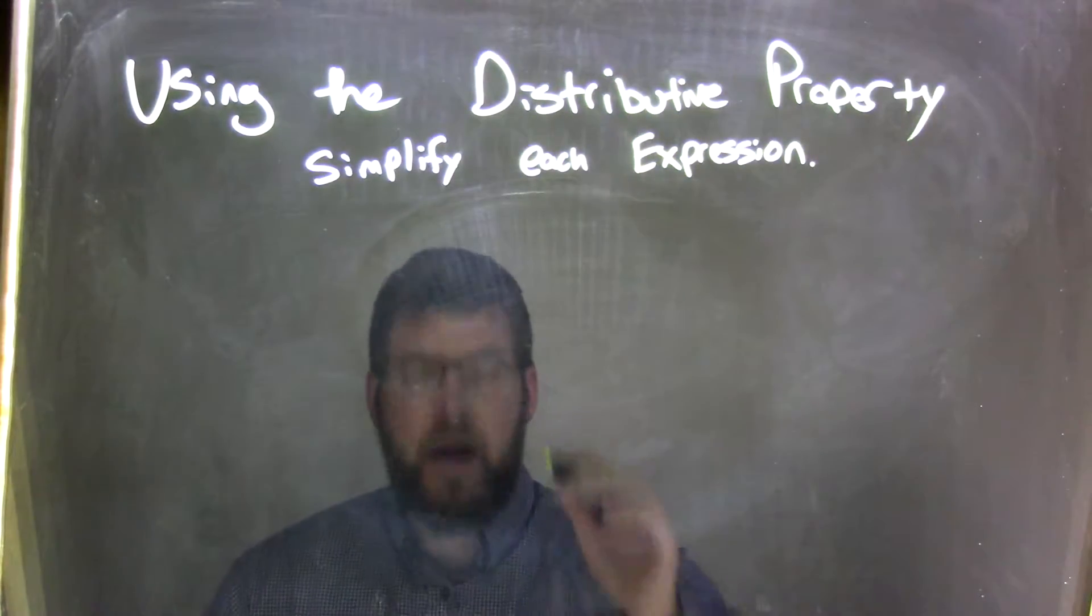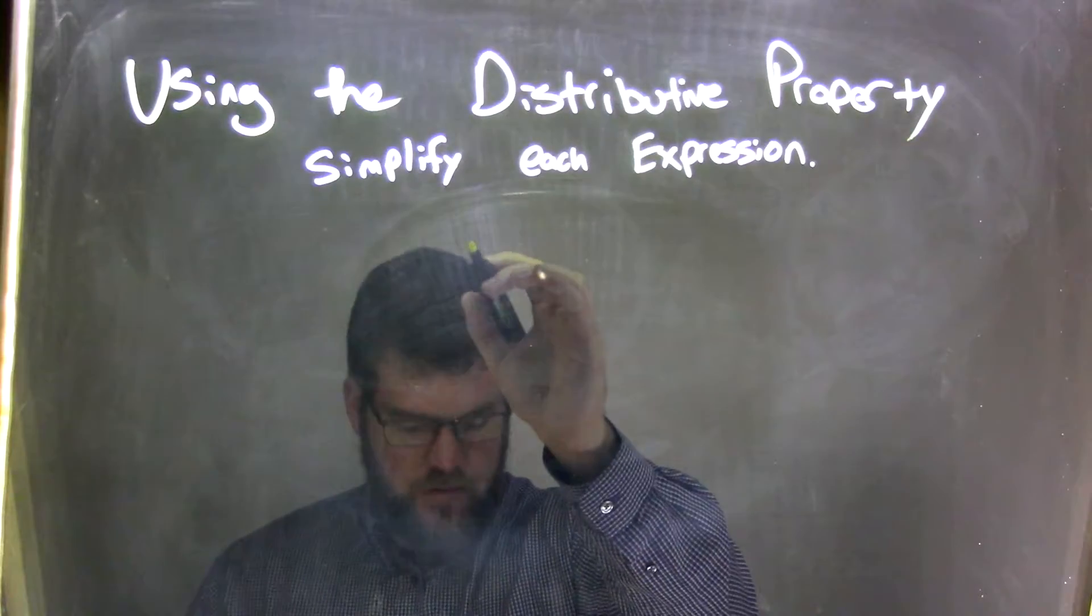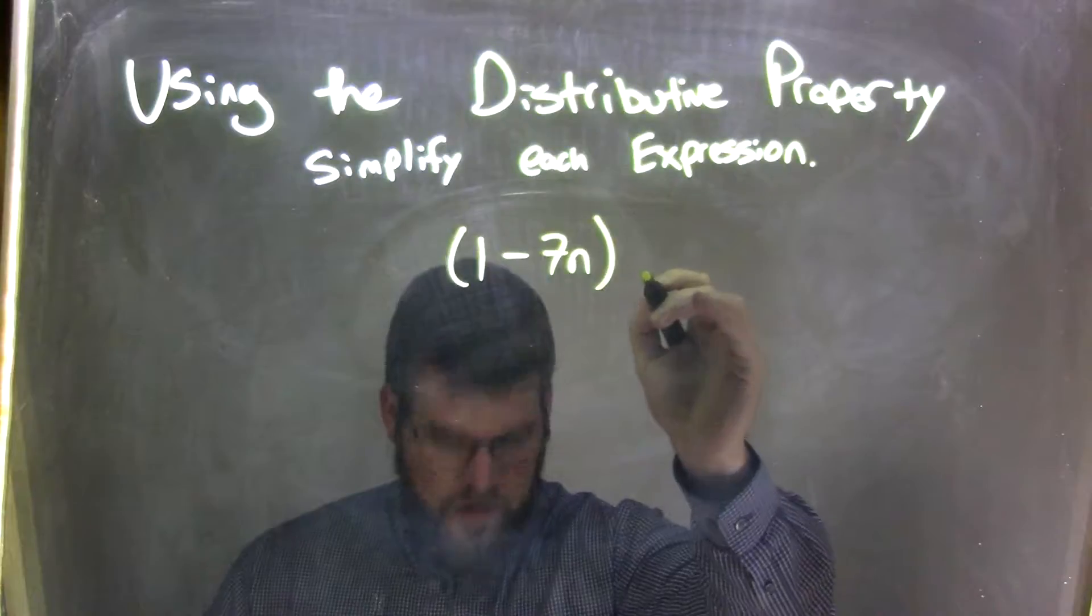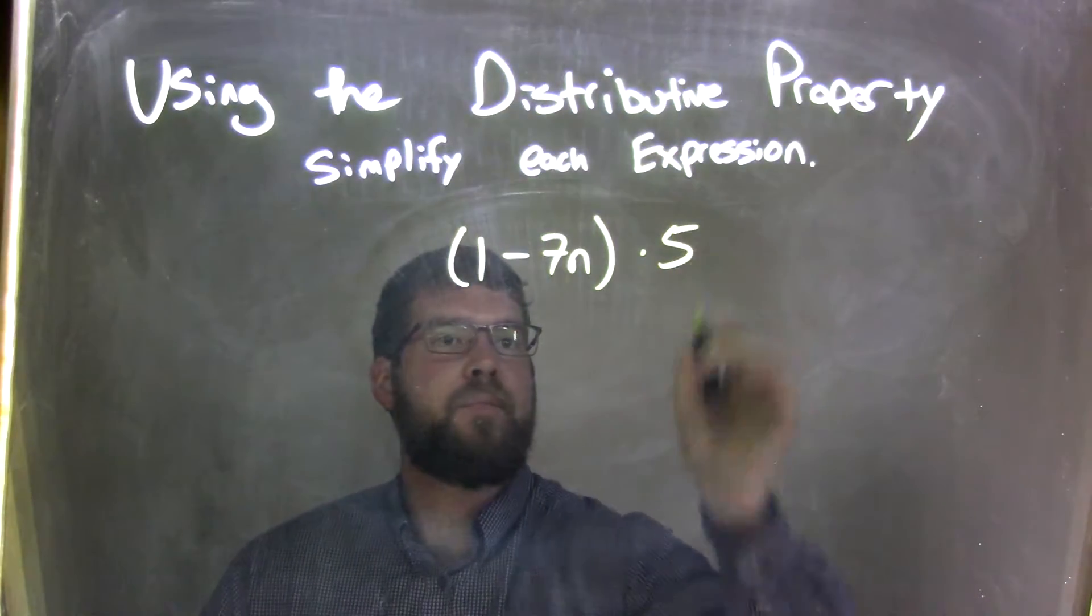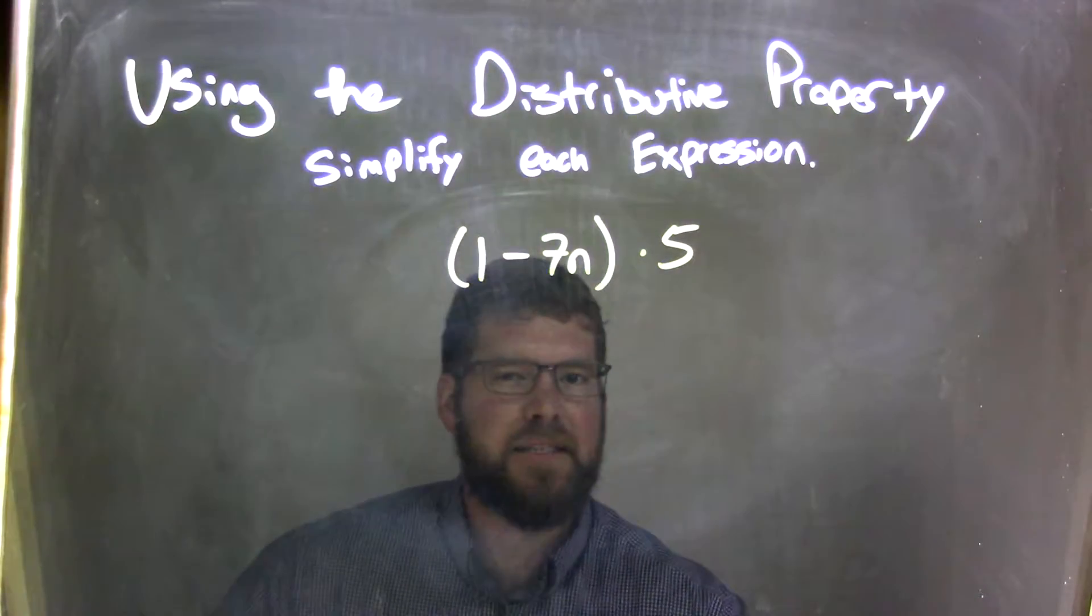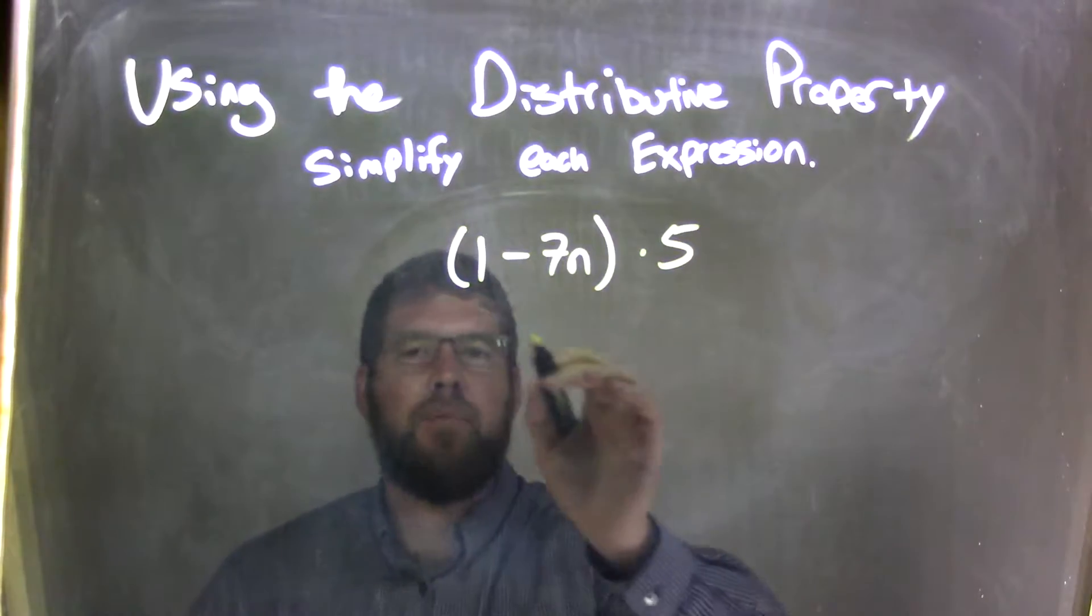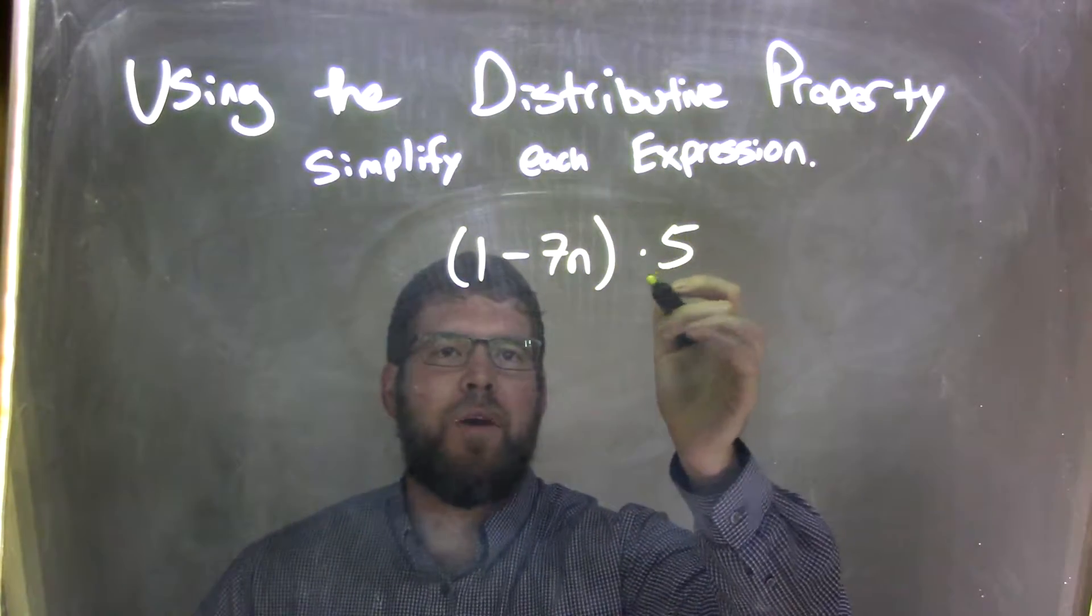So if I was given this expression: 1 minus 7n times 5. I cannot simplify what's inside the parentheses, so I have to deal with the 5 on the outside now.